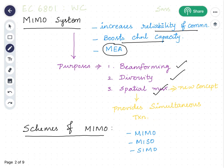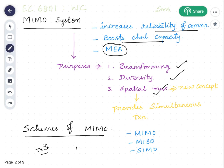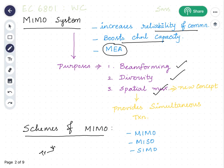In a MIMO system, multiple antennas are used on both the transmitter side and receiver side. If multiple antennas are used on the transmitter side and only one on the receiver side, that is called MISO — Multiple Input Single Output. If one antenna is used on the transmitter side and multiple antennas on the receiver side, that is called SIMO — Single Input Multiple Output.